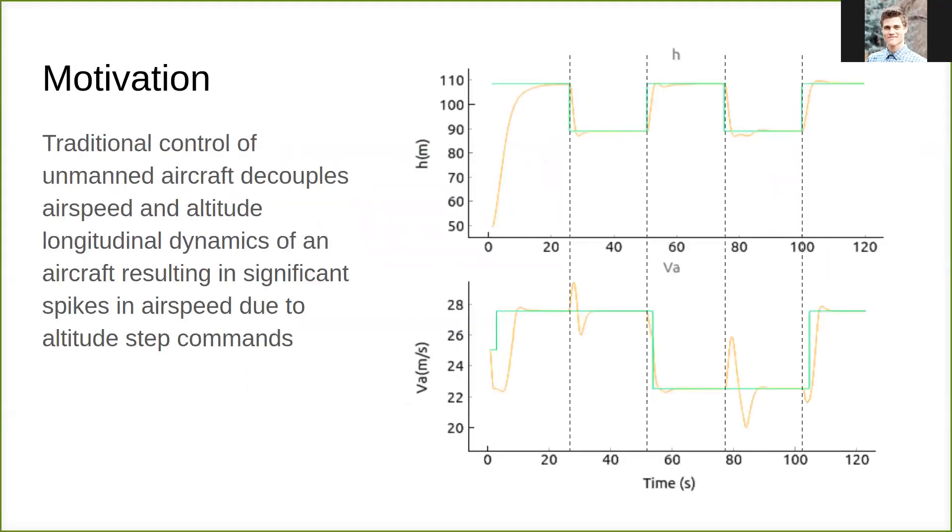The motivation behind this project is the traditional controllers of UAS decouple airspeed and altitude in the longitudinal dynamics which results in significant spikes in airspeed whenever you have transitions in your altitude. As you can see from these charts over here, whenever you drop your altitude in regular PID control you get a significant spike and oscillation in your airspeed, particularly in transitions. This is what I want to prevent.